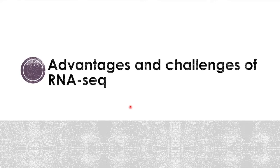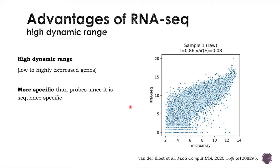Now let's see the advantages of RNA-seq and the challenges associated with it. RNA-seq is characterized by a high dynamic range because it can detect low to highly expressed genes, and is more specific than probes since it sequences the actual sequence of the mRNAs. On a comparison graph between RNA-seq intensities and microarrays, highly expressed genes are well detected by both technologies, but for lowly expressed genes, microarray intensities remain very similar whereas RNA-seq shows a much larger dynamic range.